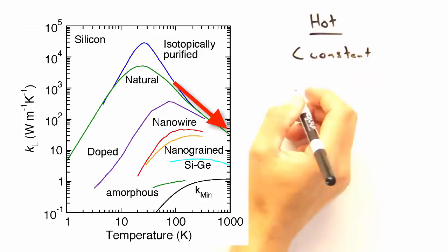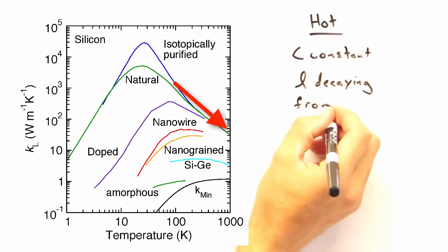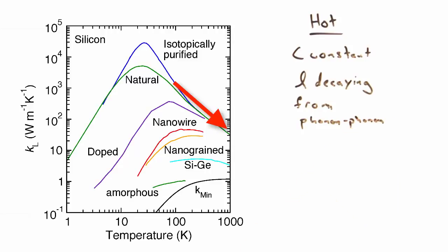And how about the right side? Well, as the temperature starts to go up and up, our heat capacity becomes a constant, but our mean free path has an inverse relationship to temperature. Why? Umklapp scattering, right? Exactly.